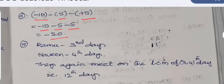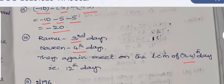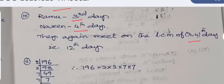Ramu visits on third day, Naveen on fourth day. They again meet on the LCM of these two days, that means 3 and 4. LCM is 12, and the next 12th day they meet once again.